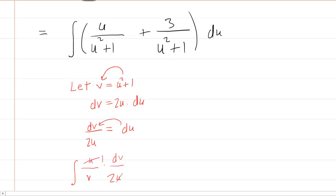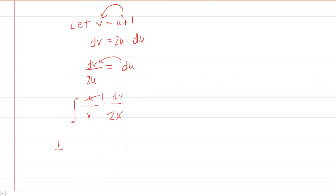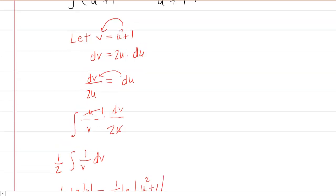You'll have a factor of one half that you can bring outside of the integral. So it's one half times the integral of one over v dv. We all know this integral is going to be the natural log of the absolute value of v. And then we know that v was equal to u squared plus one.